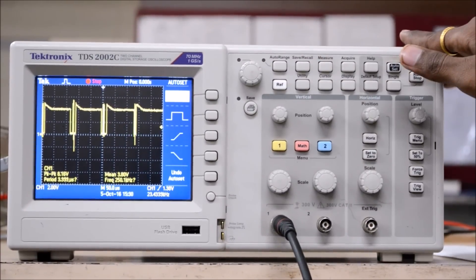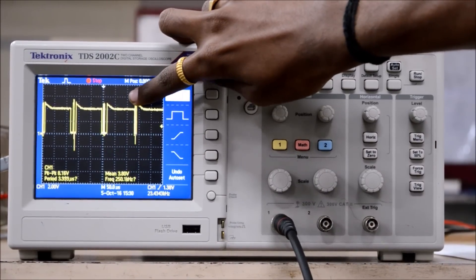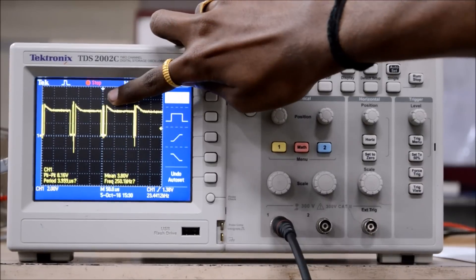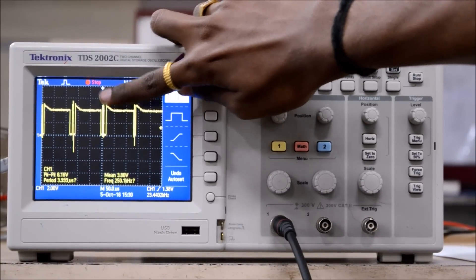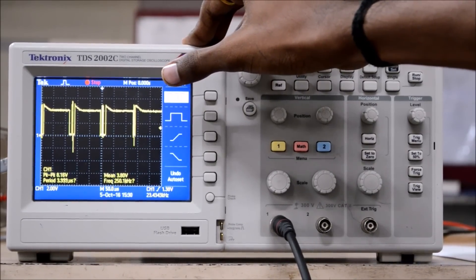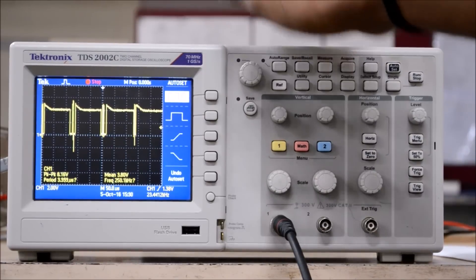Now, we have utilized 16 microseconds among this much part of this 125 microseconds. Because of this, we can perform time division multiplexing and thus we can add few more channels. The total number of channels which this ADC can be utilized is 125 divided by 16 microseconds equal to 7 point something.